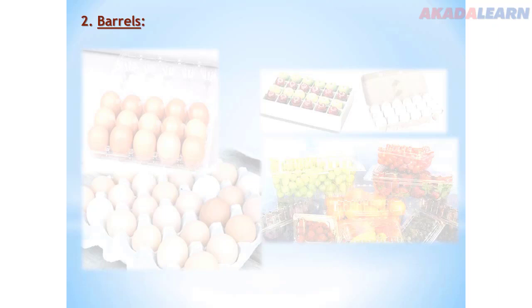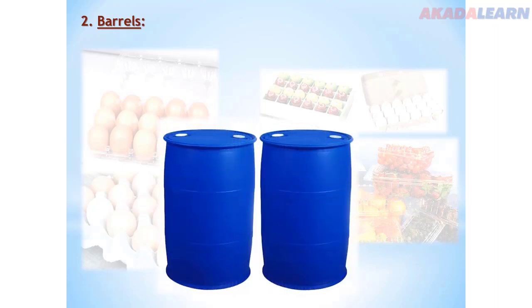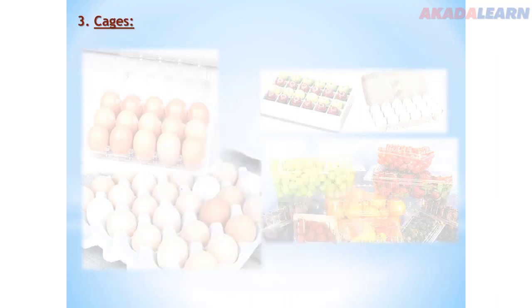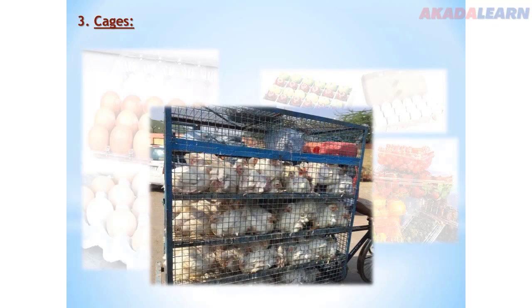Number two: barrels. These are made of wood or plastic with metal cleaves to hold the cover. Farm produce like palm oil, groundnut oil, palm kernel and soybean oil can be packaged in barrels. Number three: cages. Cages are used for the marketing and transportation of live animals such as domestic fowl, turkey, guinea fowl, and sometimes dogs.